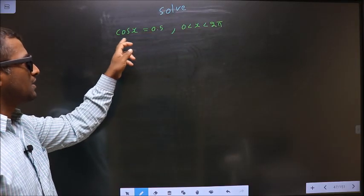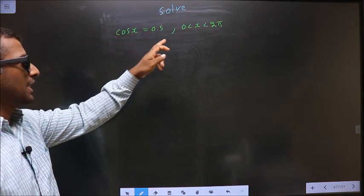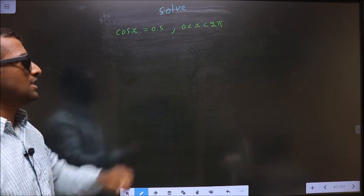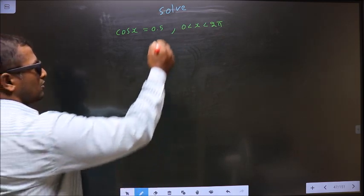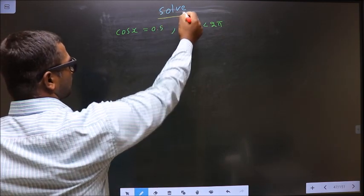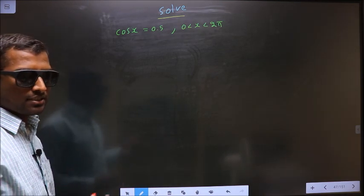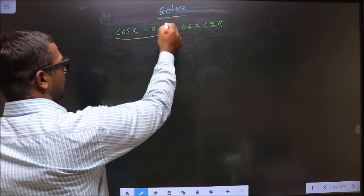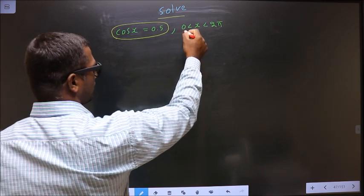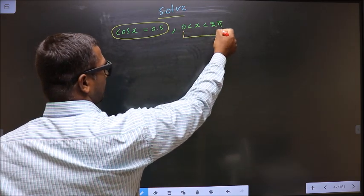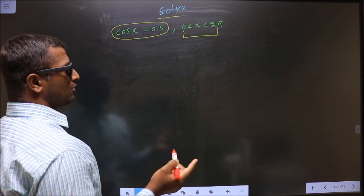Solve cos x equal to 0.5, where x lies between 0 to 2 pi. You need to get the values for x satisfying this equation, and those values should lie in the interval 0 to 2 pi.